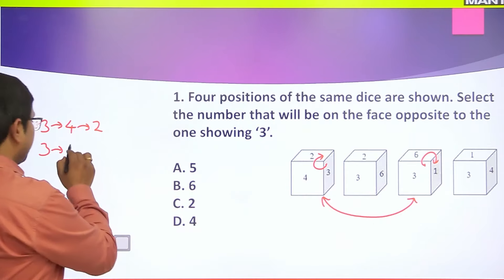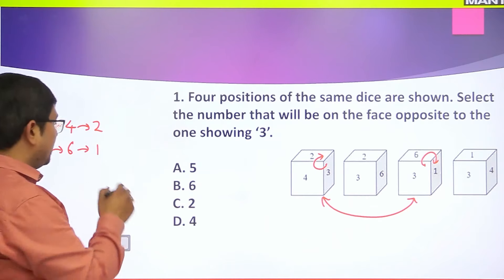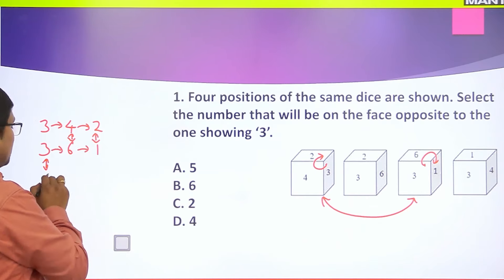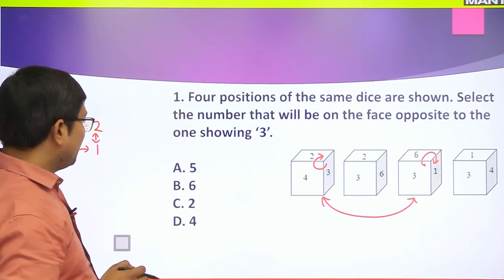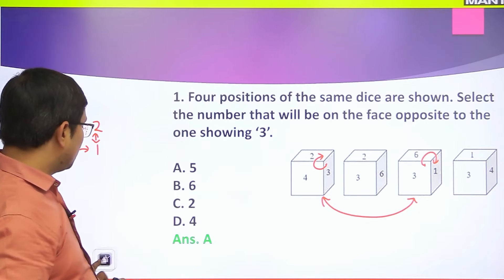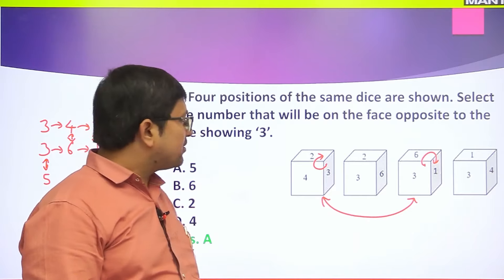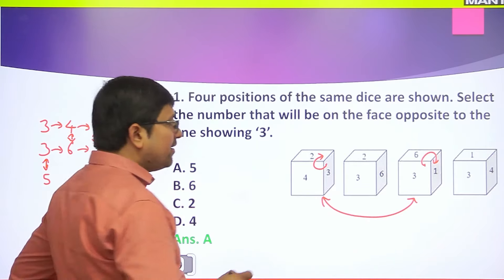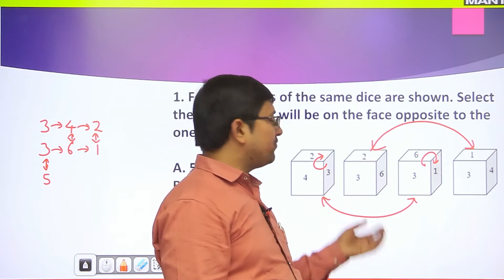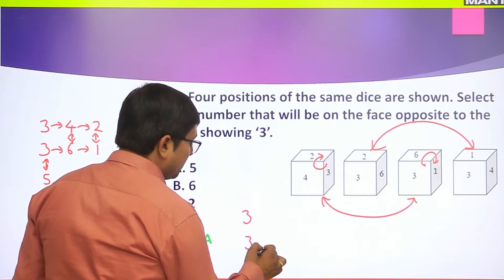So the opposite pairs are: 2 opposite 1, 4 opposite 6, and 3 opposite 5. Looking at the available options, 3 opposite is 5, so the answer is option A, that is 5. Now, you don't need to memorize anything - just look at both images, find the common face which is 3, and always start from that common face.